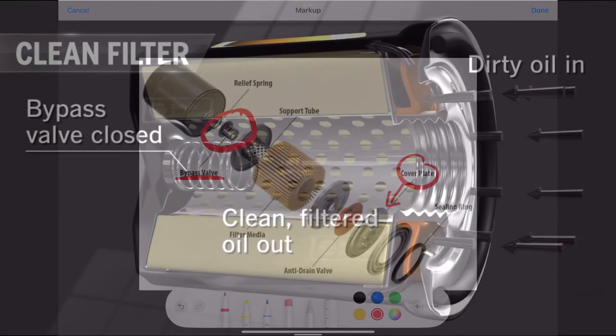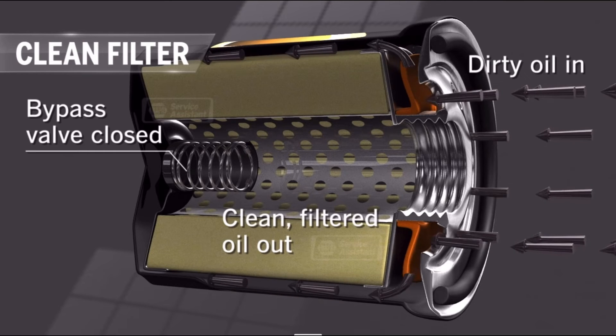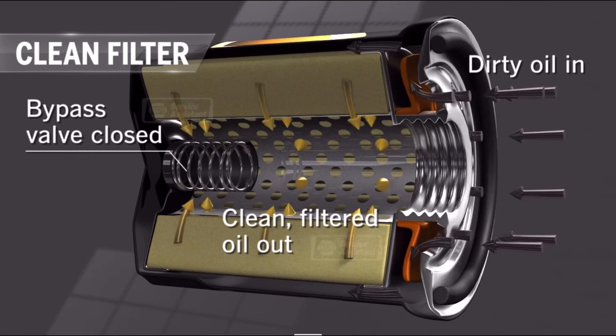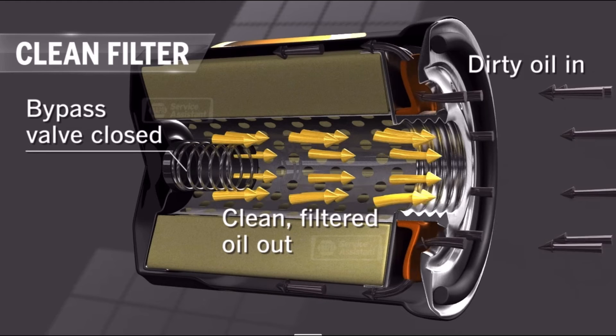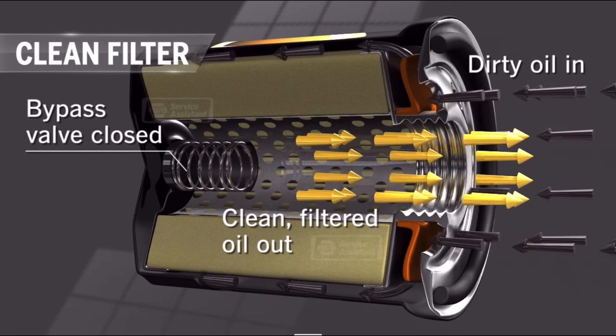And the process will look something like this. We have the dirty oil flowing through the cover plate and through the filter media and then through the support tube and then off to the engine. However...